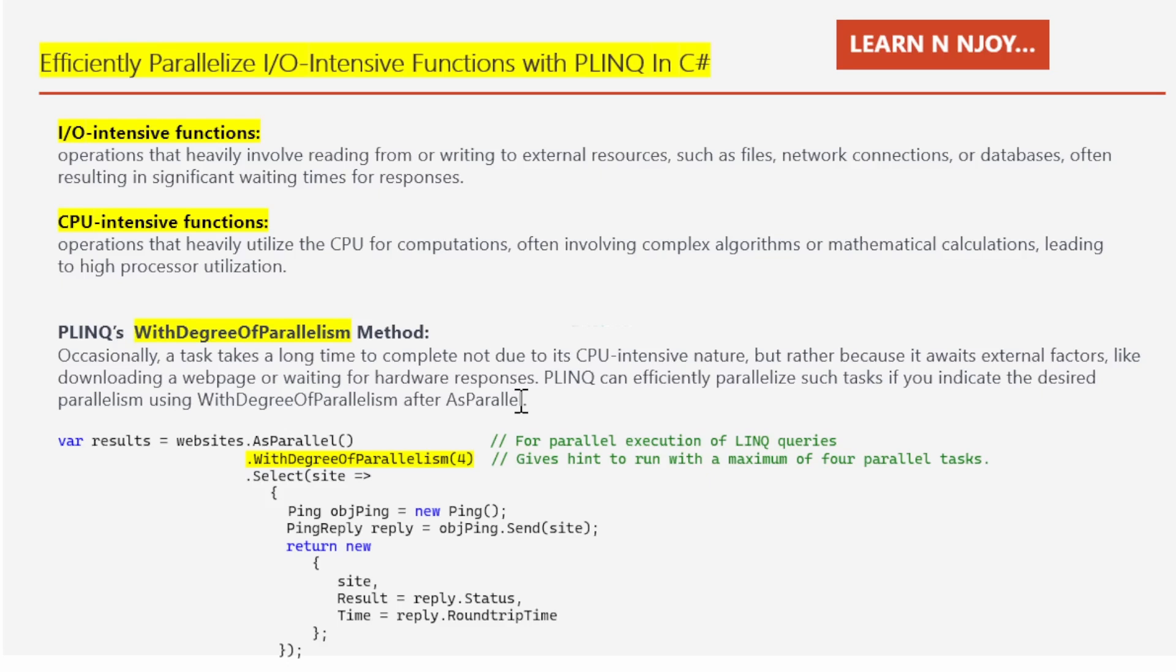If you don't specify this, PLINQ might assume that your task is more about crunching numbers than waiting for responses, and it won't parallelize effectively. Let's try to understand with the code snippet shown here. I have written var results = websites.AsParallel(). I've written AsParallel method because I want parallel execution for the LINQ queries.